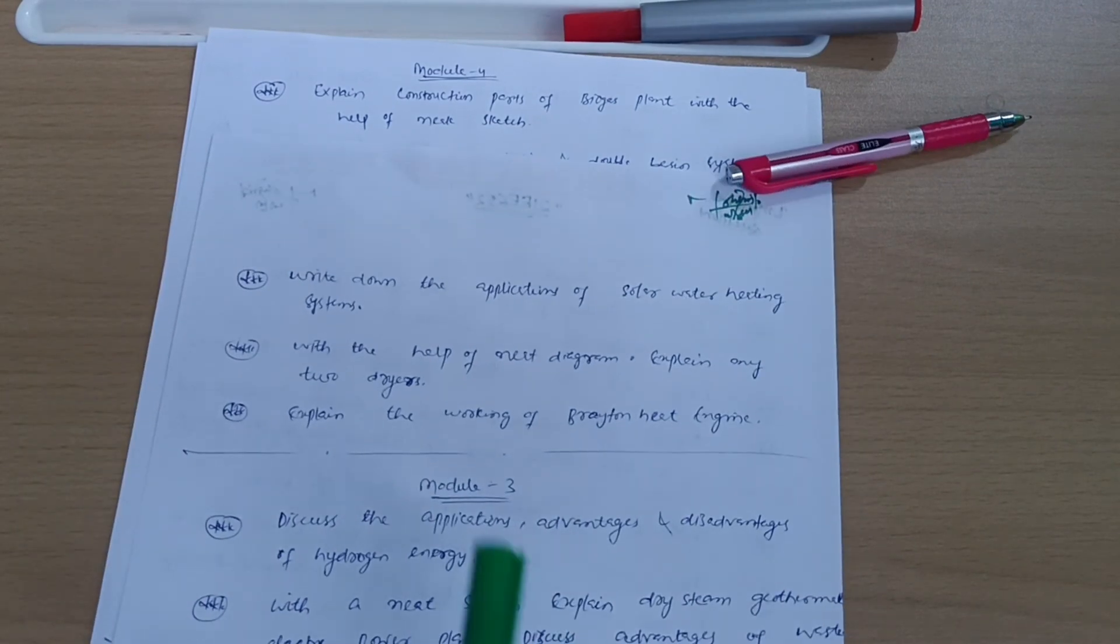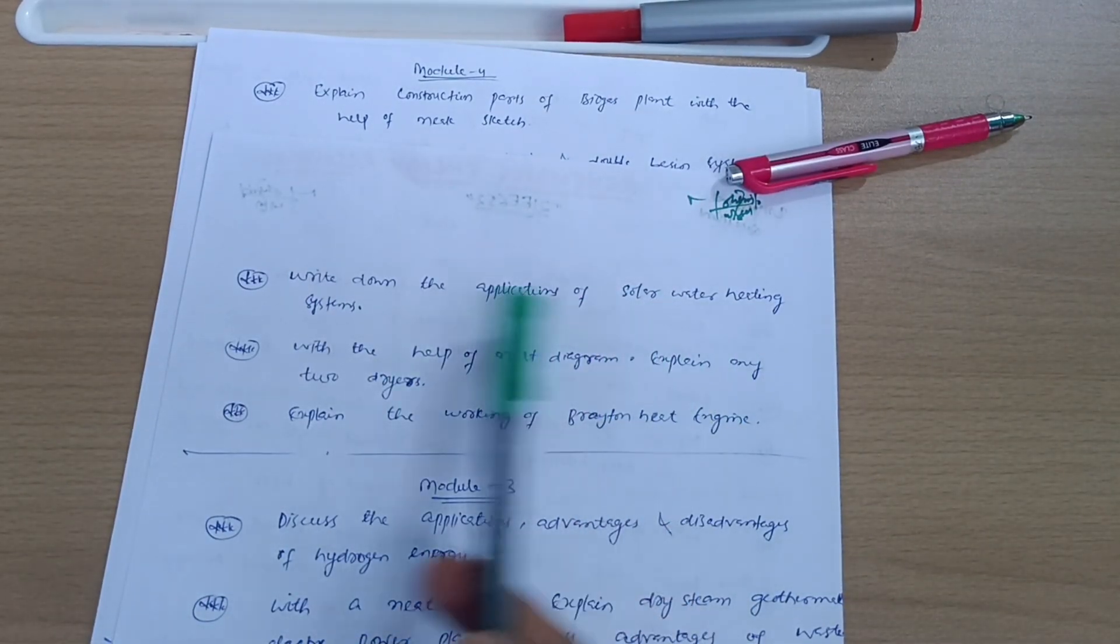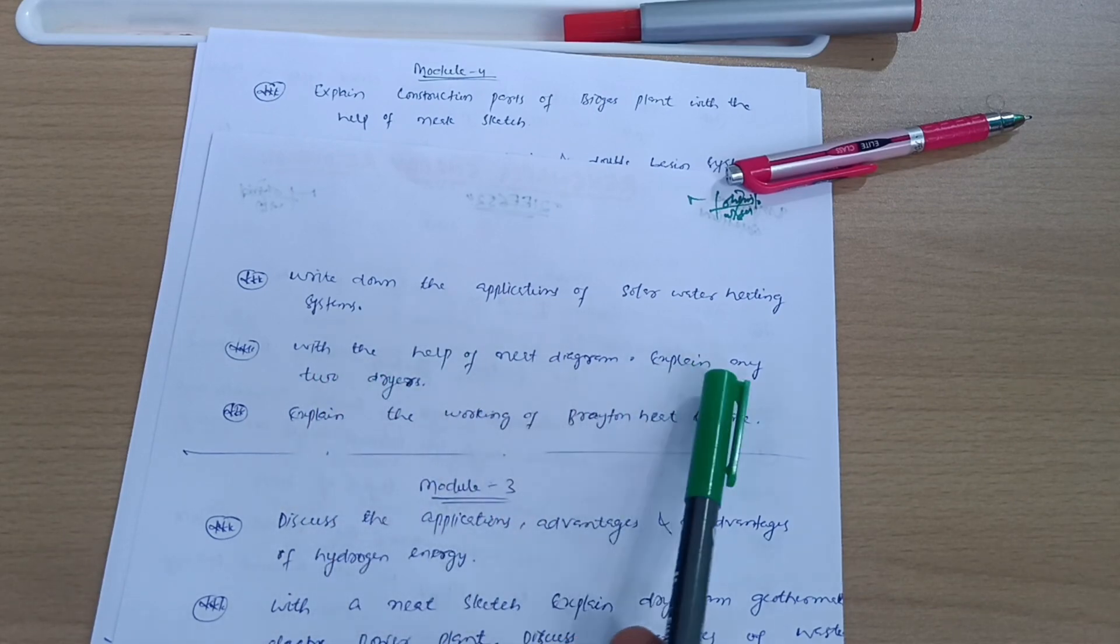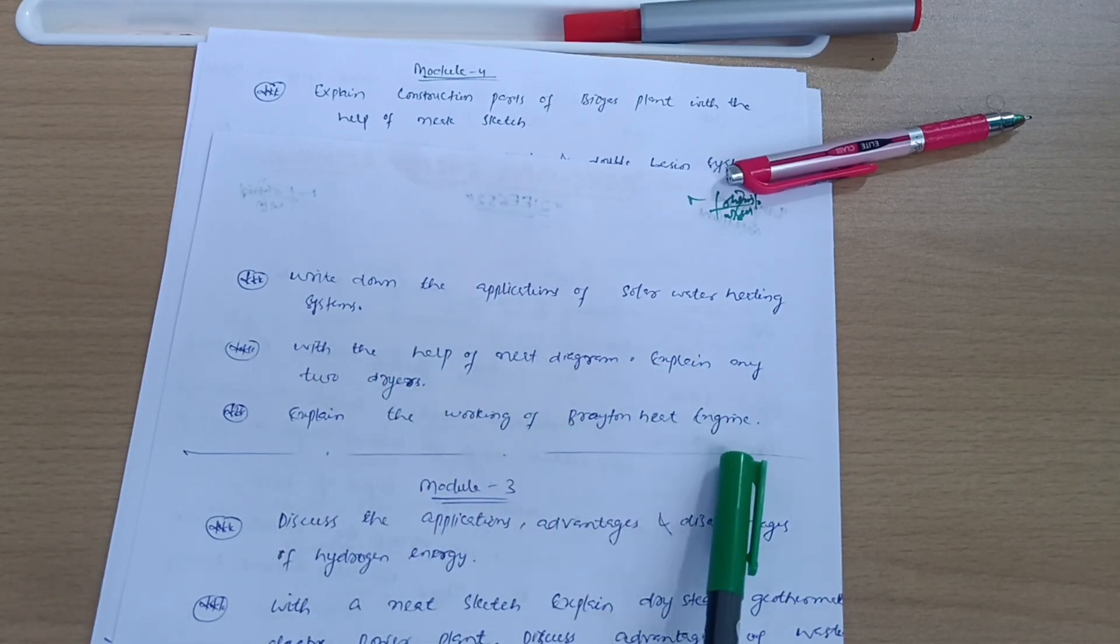Next three questions from Module 2: Write down the applications of solar water heater heating systems with the help of neat diagram. Explain any two drivers. Explain the working of Brayton heat engine. This is all about Module 2.